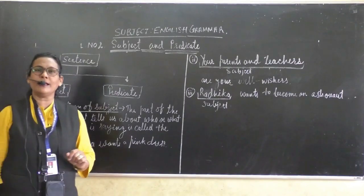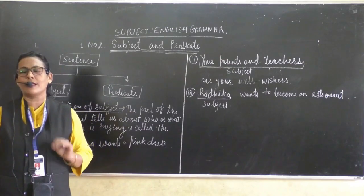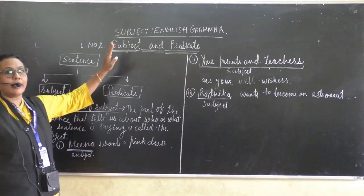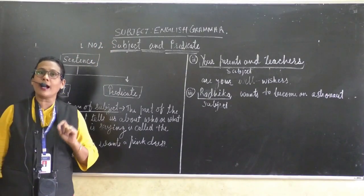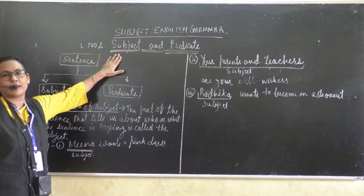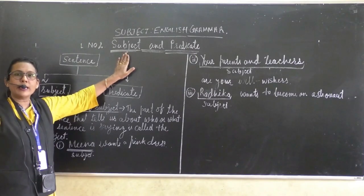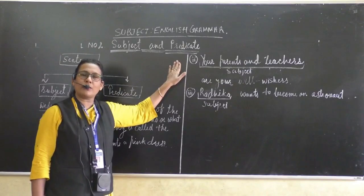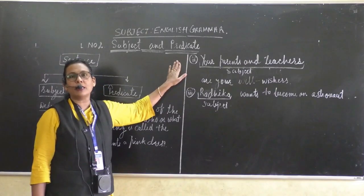How many types of sentences are there? Yes, you are correct. That is the four types of sentences. And the second lesson, lesson number two in our textbook, is the subject and the predicate. So we are learning here what is meant by subject and what is meant by predicate, and you are going to figure out a few examples on this chapter.